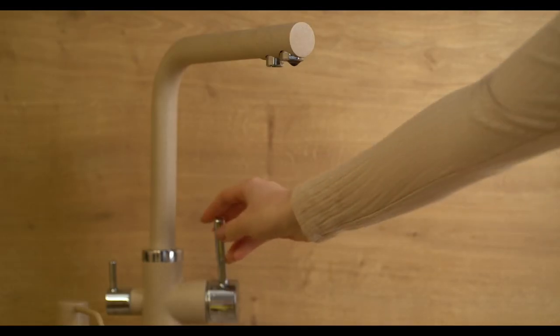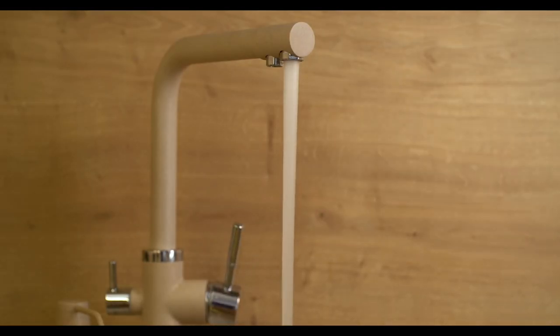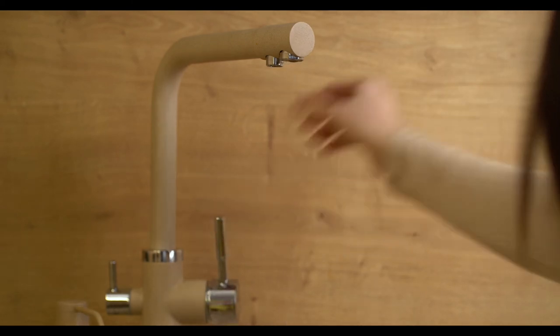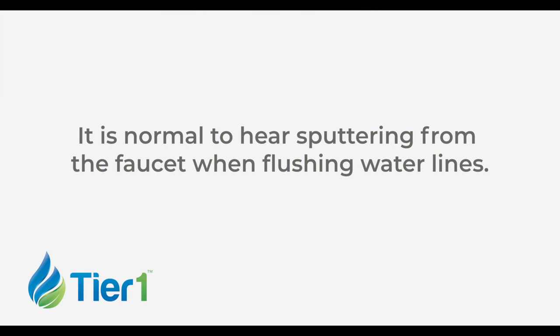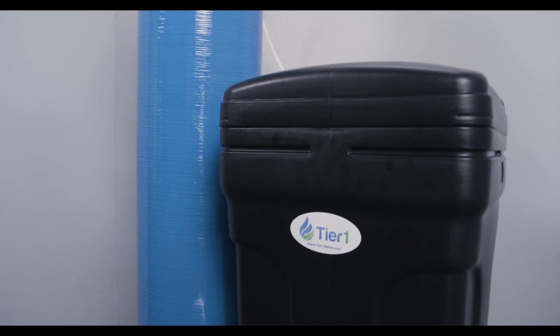Go to the faucet in your home furthest from the unit. Turn it on and let the water flow until the plumbing lines have been purged of any air or any debris. It is normal to hear sputtering from the faucet when flushing water lines after a new installation. Your water softener should now be fully operational.